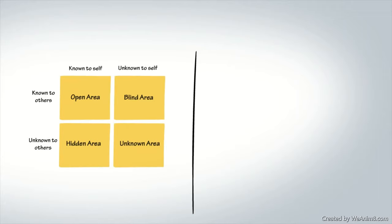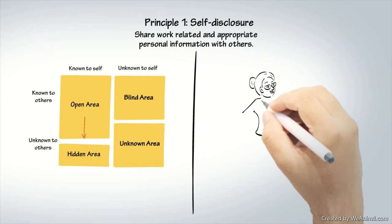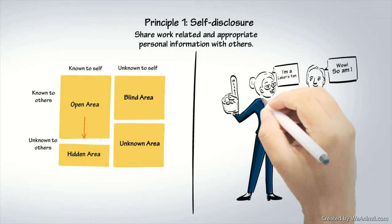Principle one: self-disclosure. Share work-related and appropriate personal information with others. If Robin shares that she's a Lakers fan, it will decrease her hidden area, increase her open area, and help her colleagues feel more comfortable to share appropriate personal information in return.